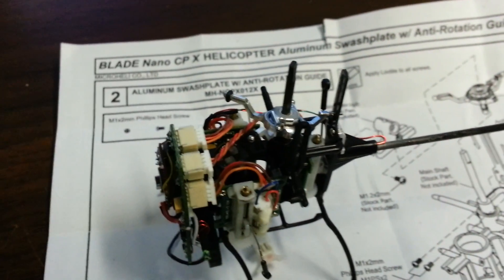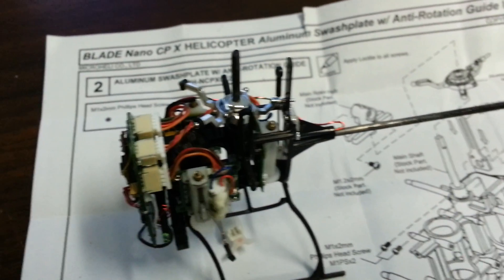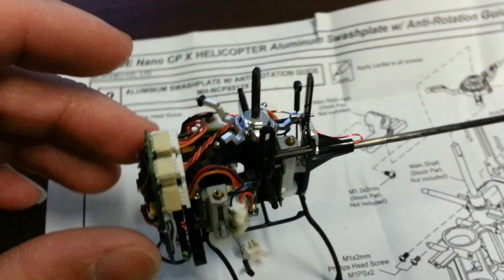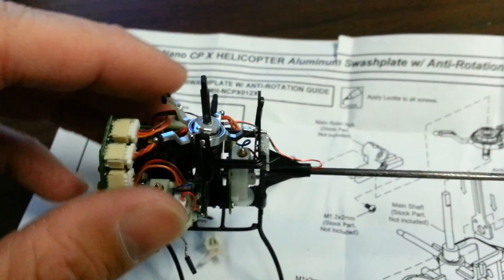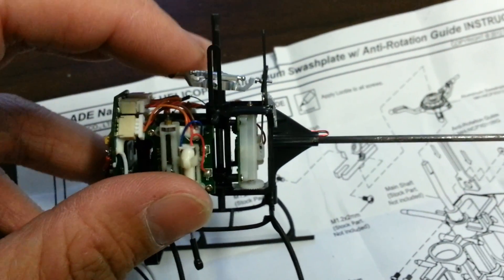I'm installing my micro heli swash plate on the Nano and I ran into a slight problem with the anti-rotation bracket. You can see here, the swash plate looks very nice, but the problem is when the swash plate is mounted...